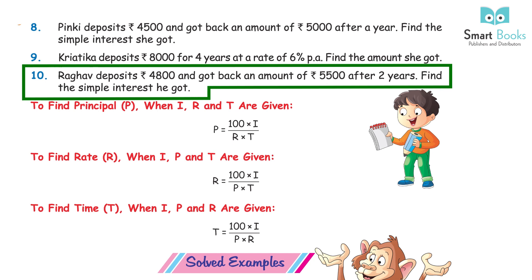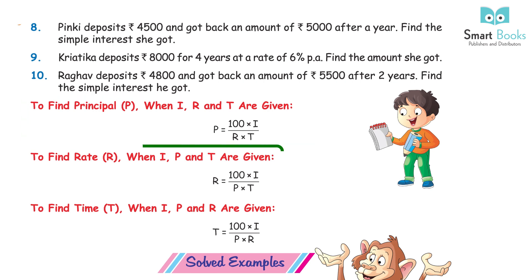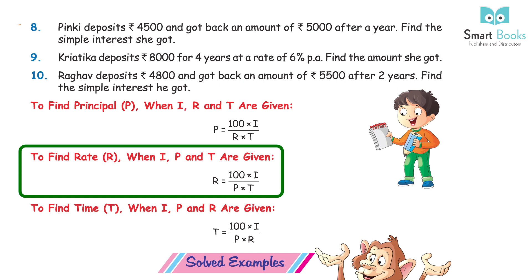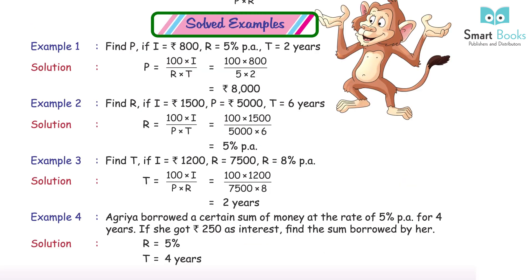Answer: Rs 700. To find principal P when I, R and T are given: P = 100 × I ÷ (R × T). To find rate R when I, P and T are given: R = 100 × I ÷ (P × T). To find time T when I, P and R are given: T = 100 × I ÷ (P × R).